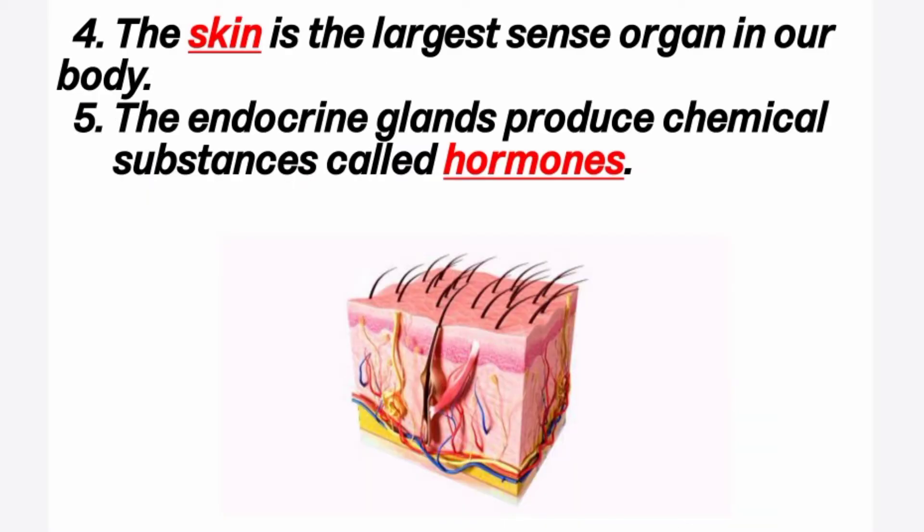The largest sense organ in our body is the skin. The endocrine glands produce a chemical substance called hormones.